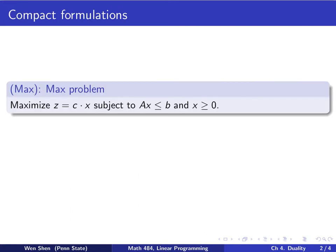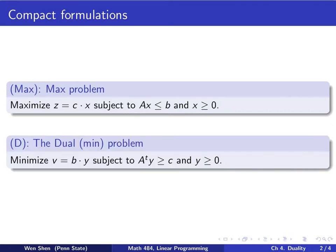Now we can formulate our max problem in a very compact way. The max problem is the following: I want to maximize z, which is c dot x, subject to the constraint A times x is less than b. So A is a matrix, x is a vector, b is a vector. And the x vector is bigger than 0.